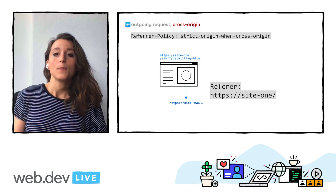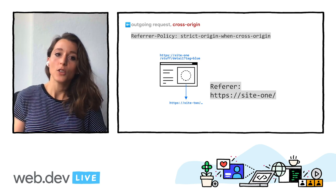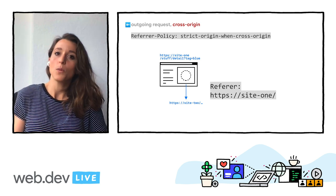And if you don't set a policy, the browser's default policy will be used. And to have your back, browsers have switched to or are experimenting with more privacy-preserving default policies, for example, strict-origin-when-cross-origin — the policy we just talked about. You can already try this out, so check the article in the video notes for details.